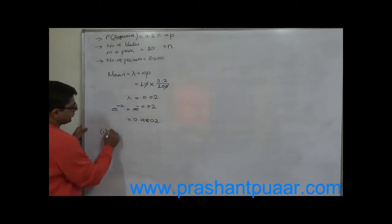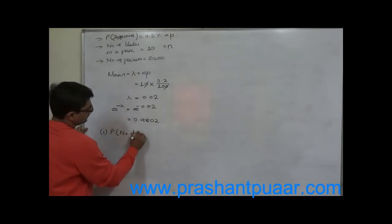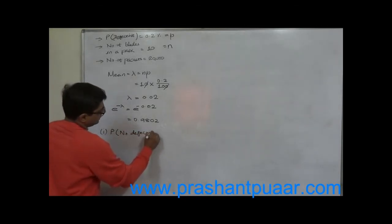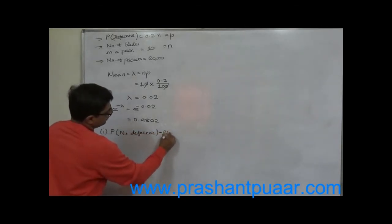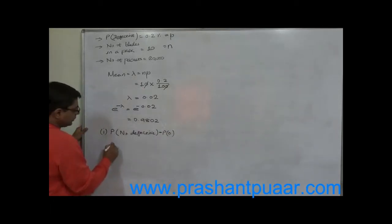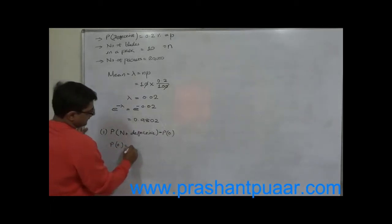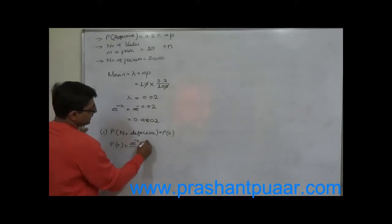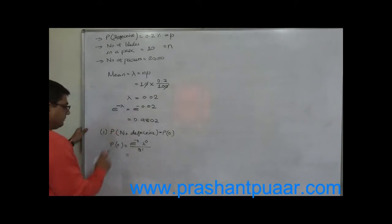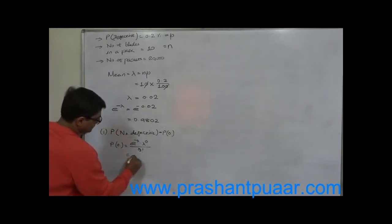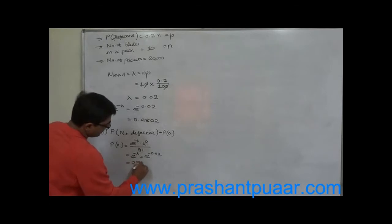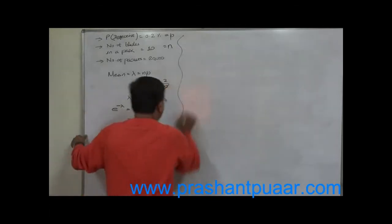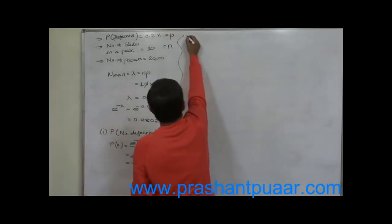First, find the probability of no defective blades, that is P(0). P(0) equals e raised to minus mean, multiplied by mean raised to 0 divided by 0 factorial. Since mean raised to 0 is 1 and 0 factorial is 1, this simplifies to e raised to minus 0.02, which equals 0.9802.